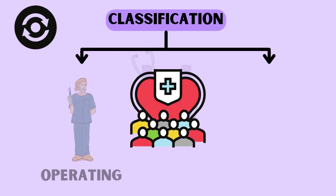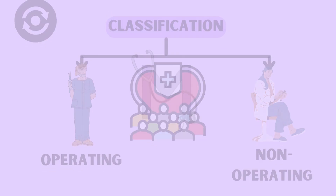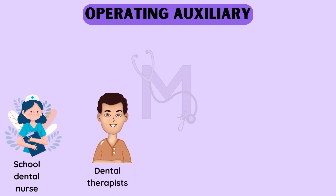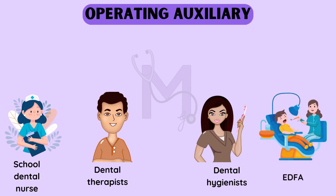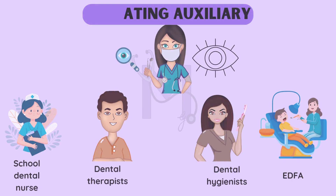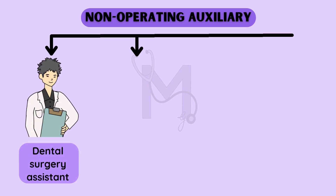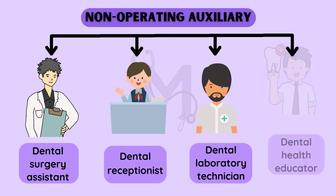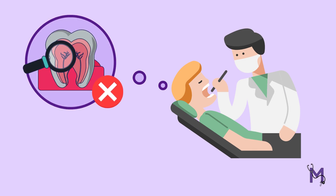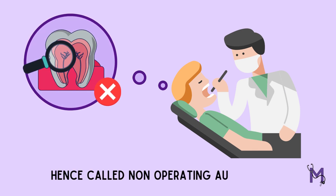This classification was later revised. It was again divided into operating and non-operating auxiliaries on the same basis as discussed previously. The operating auxiliary now included school dental nurses, dental therapists, dental hygienists, and an expanded function dental auxiliary, all of whom were permitted to carry out certain treatment procedures under direct supervision. On the other hand, non-operating auxiliaries included the dental surgery assistant, dental receptionist, dental laboratory technician, and dental health educator. These people cannot themselves provide treatment or carry out procedures and hence are called non-operating auxiliaries.